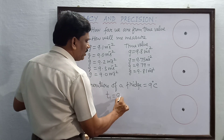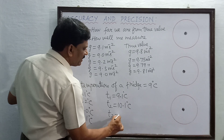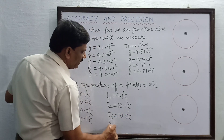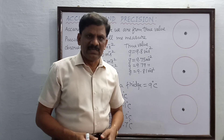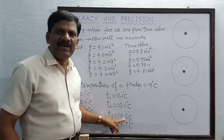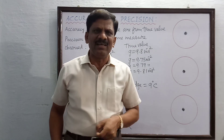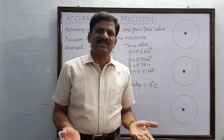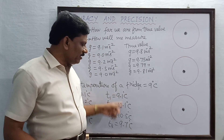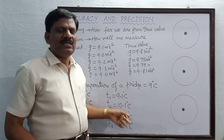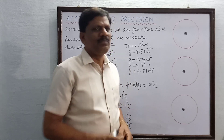Now suppose another person measures the same refrigerator temperature and gets: t1 = 9.1°C, t2 = 10.1°C, t3 = 10.5°C, and t4 = 9.7°C. Here, 9.1 and 10.5 are very far from each other, so these observations are not precise. Also, the average of these four values is greater than 10, which is far from the true value of 9°C. So they are neither precise nor accurate.